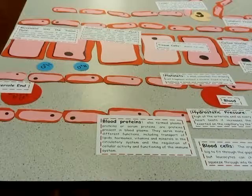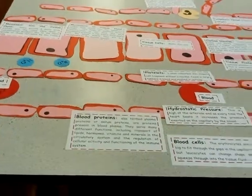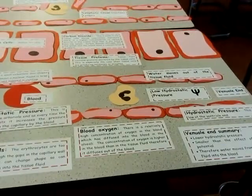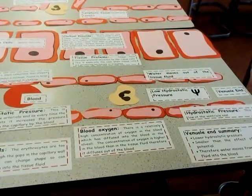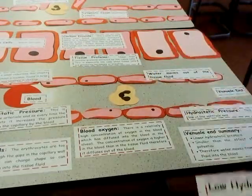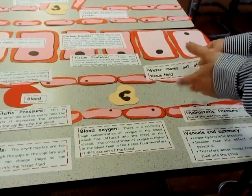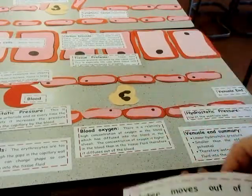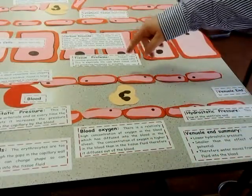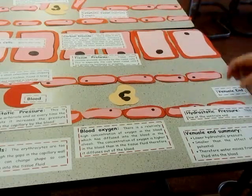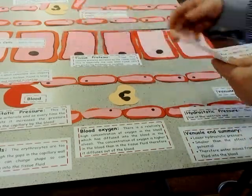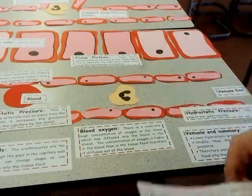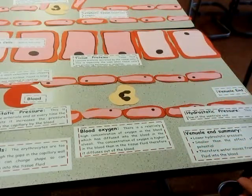At the opposite end — the venule end — the hydrostatic pressure in the blood in the capillary is a lot lower. So because the blood hydrostatic pressure at the venule end is lower, water moves out of the tissue fluid back into the blood. As it moves back into the blood, it takes the waste products made by the tissue — for instance, carbon dioxide, urea, and various other waste products.